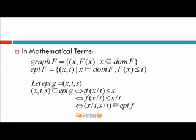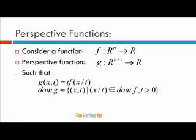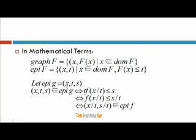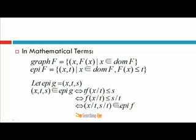Now consider the perspective function g of function f, and consider the epigraph of this perspective function g. Let the epigraph of g be represented by the set of values x, t, and s such that x, t, and s belong to the epigraph of g. This gives us the relation g(x,t) ≤ s, and moving t over we get f(x/t) ≤ s/t, which means x/t comma s/t belongs to the epigraph of f.